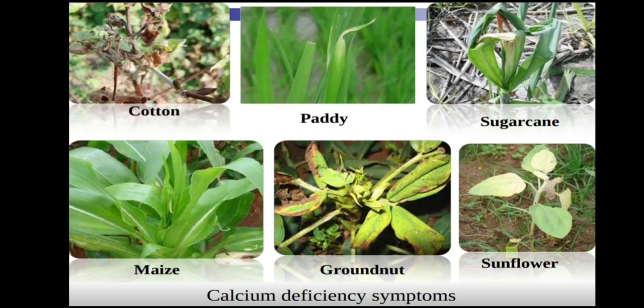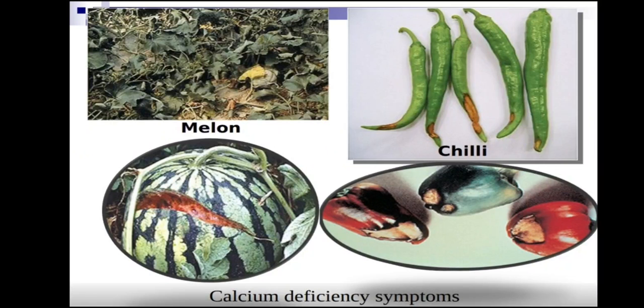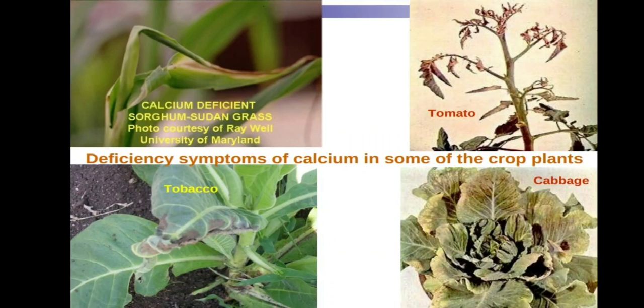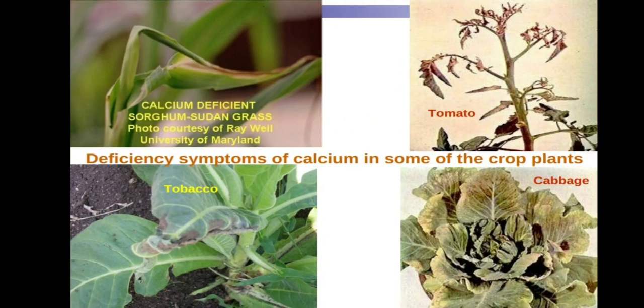Important physiological disorders of calcium deficiency include blossom end rot and cracking of fruits — these are the two most important disorders of calcium deficiency in tomato and other crops. Shoot tips becoming necrotic is also an important symptom. To correct calcium deficiency, spray calcium ammonium nitrate (CAN), super phosphate, or gypsum to supply calcium to the soils.